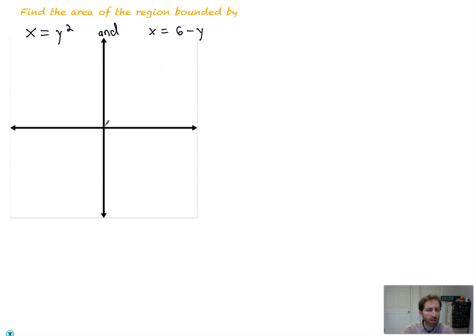X equals y squared looks something like this. It's a parabola on its side. And if you've got a nice teacher or professor, they're going to probably provide you with the region. If not, what you can always do is solve for y and see that you get plus or minus the square root of x, if you really need to.